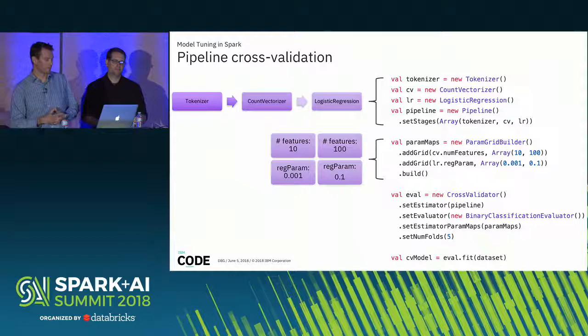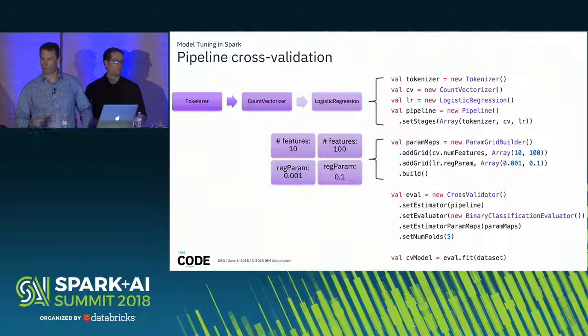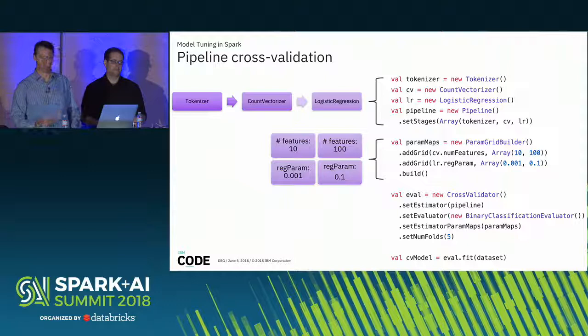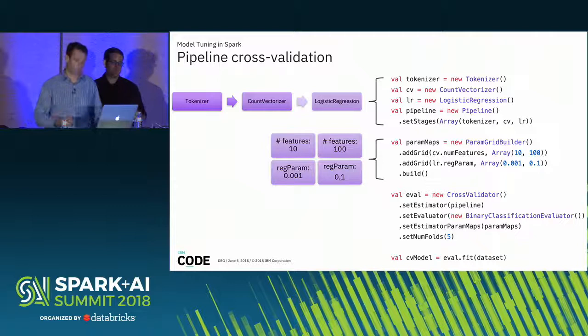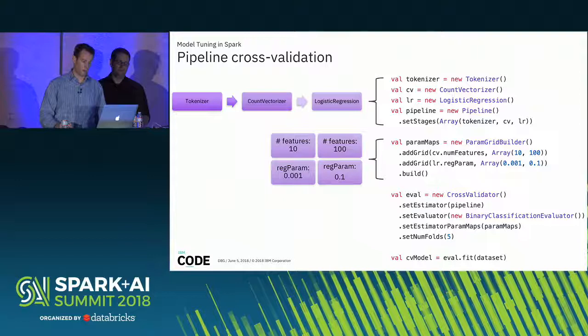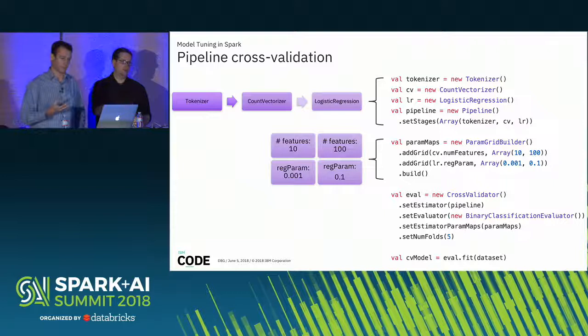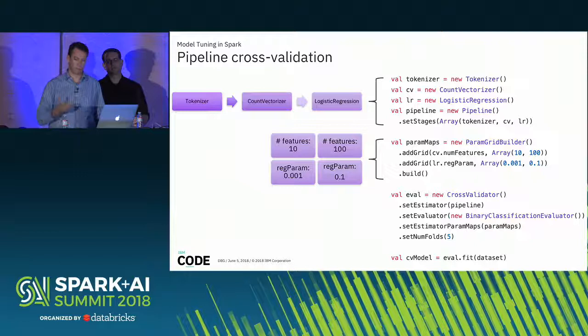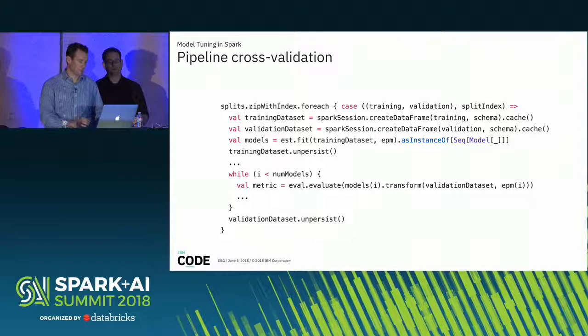Spark makes this really nice and easy. There's the Spark equivalent code in Scala — we can create this pipeline from the Spark ML components. Then we provide it with a convenience class called the ParamGridBuilder. All we have to do is pass in the raw parameter settings we want, and it'll build a parameter grid for us automatically. Then we've got a CrossValidator class, and what's nice is we can set the estimator to be the pipeline itself. The CrossValidator will handle training and evaluation across that entire pipeline for each parameter grid setting.